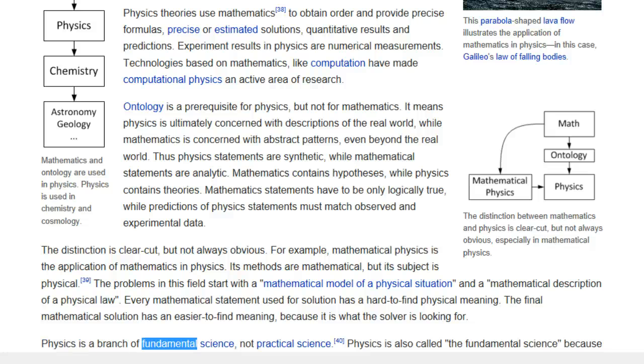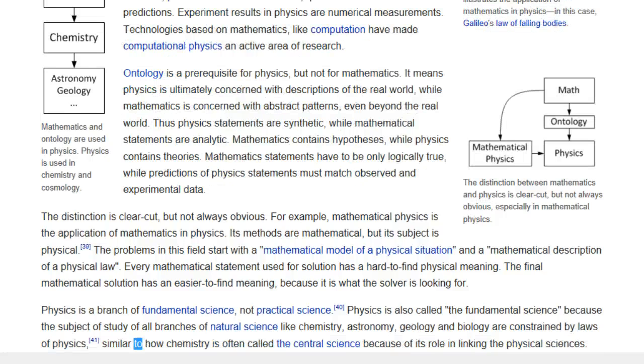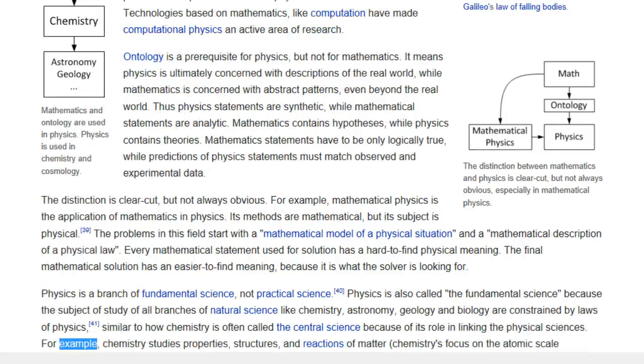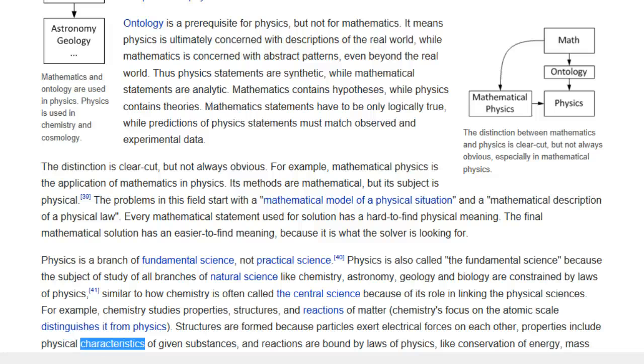Physics is a branch of fundamental science, not practical science. Physics is also called the fundamental science because the subject of study of all branches of natural science like chemistry, astronomy, geology, and biology are constrained by laws of physics, similar to how chemistry is often called the central science because of its role in linking the physical sciences. For example, chemistry studies properties, structures, and reactions of matter. Chemistry's focus on the atomic scale distinguishes it from physics. Structures are formed because particles exert electrical forces on each other, properties include physical characteristics of given substances, and reactions are bound by laws of physics, like conservation of energy, mass, and charge.